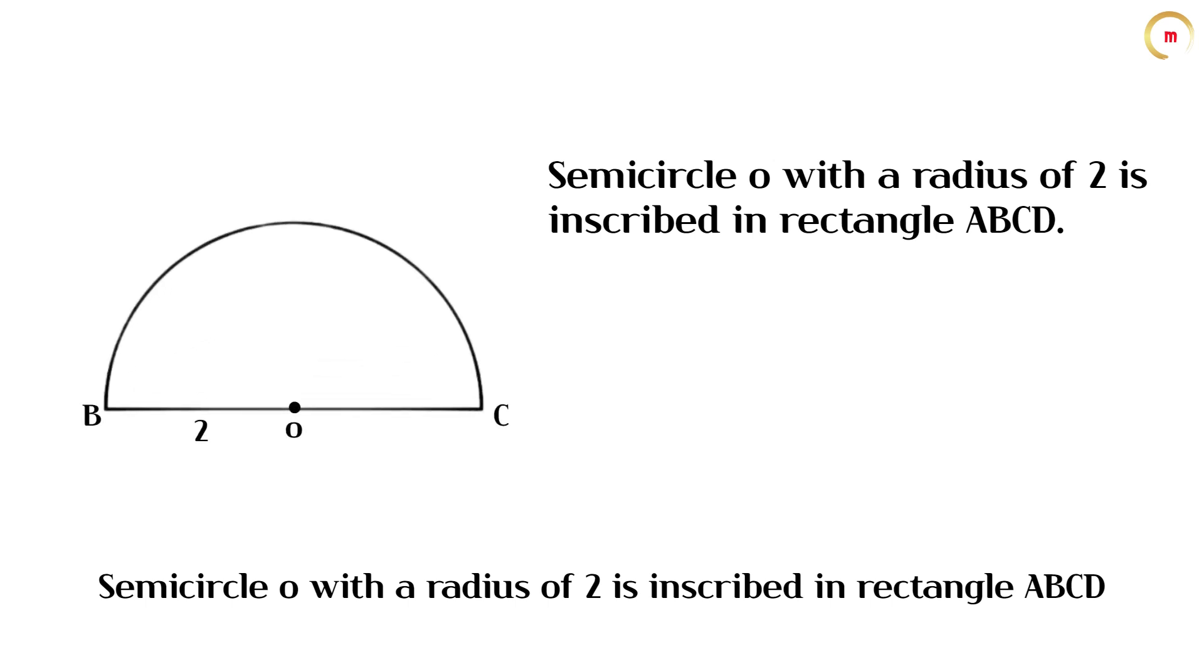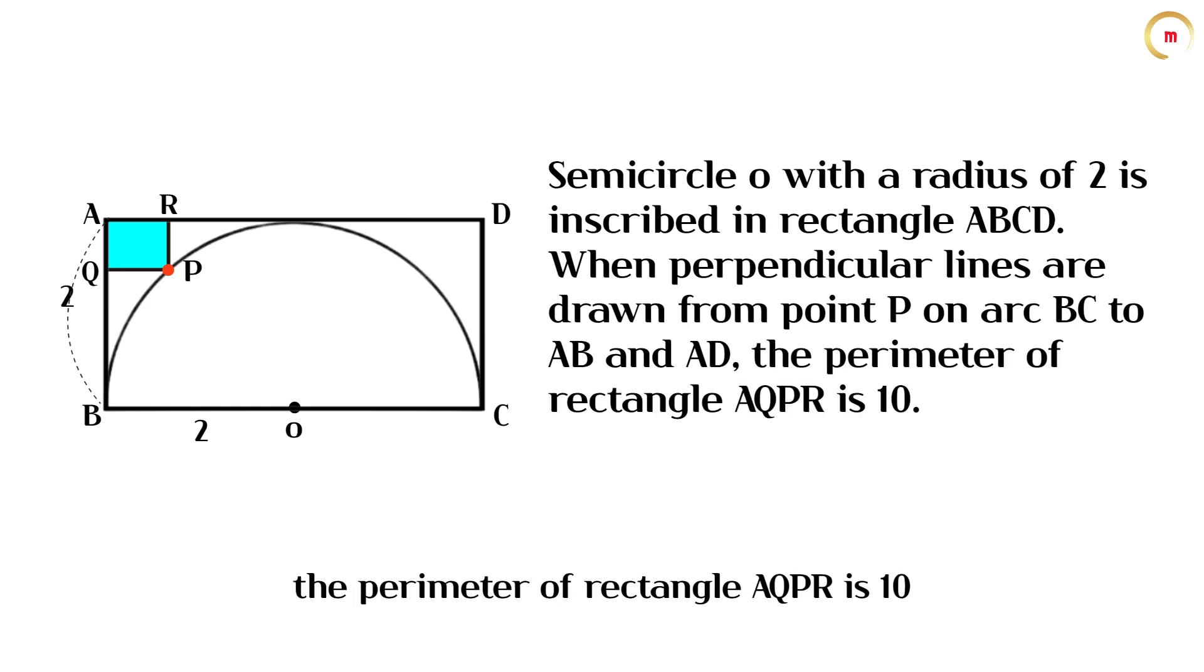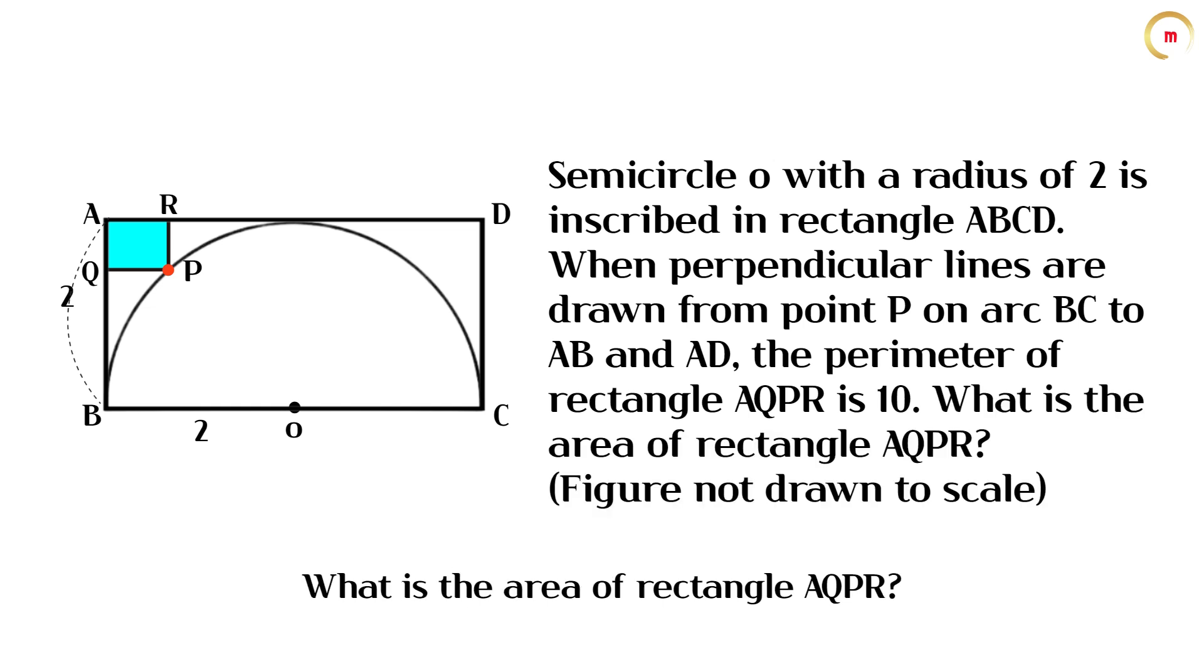Semi-circle O with a radius of 2 is inscribed in rectangle ABCD. When perpendicular lines are drawn from point P on arc BC to AB and AD, the perimeter of rectangle AQPR is 10. What is the area of rectangle AQPR?